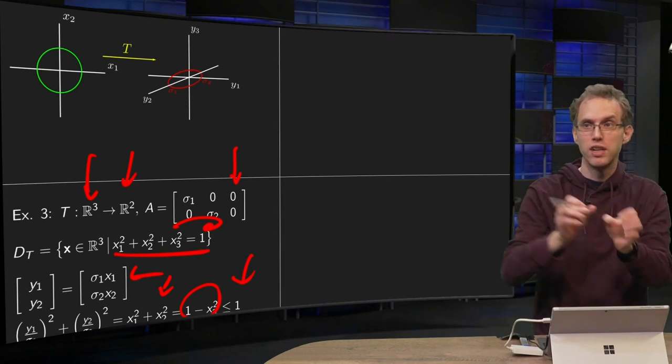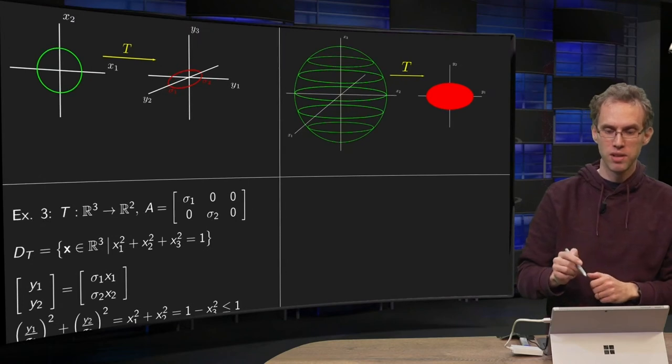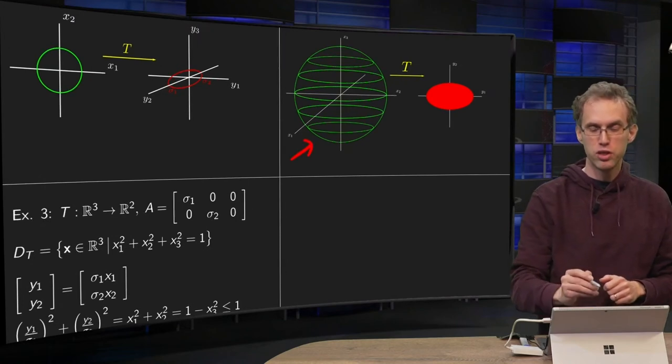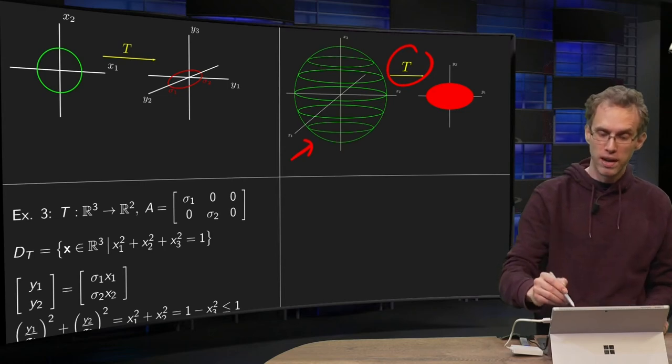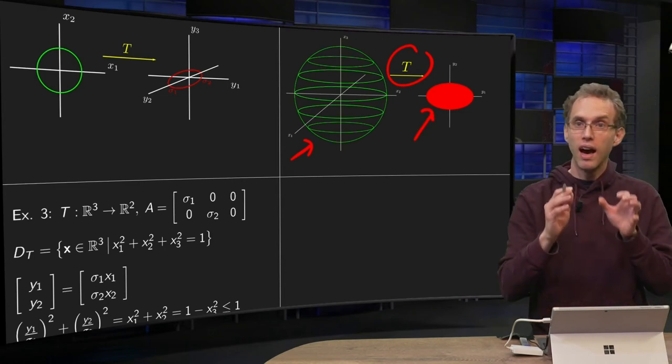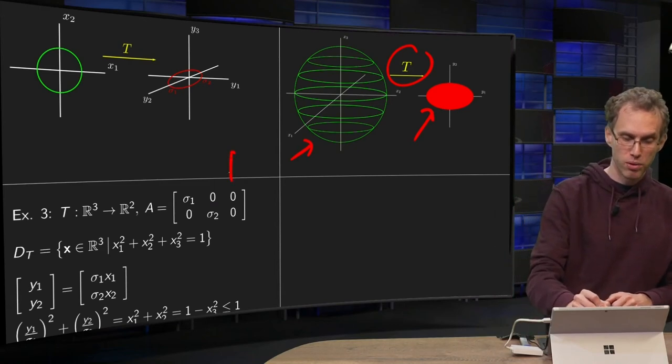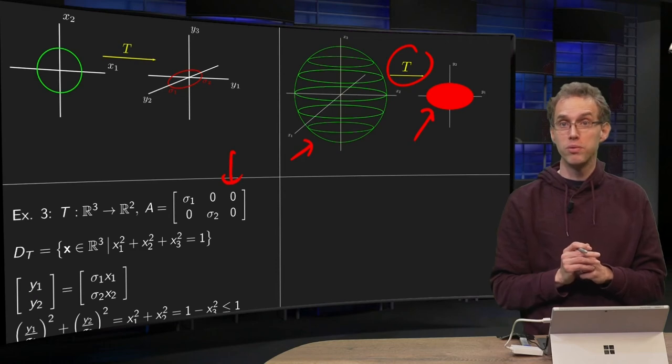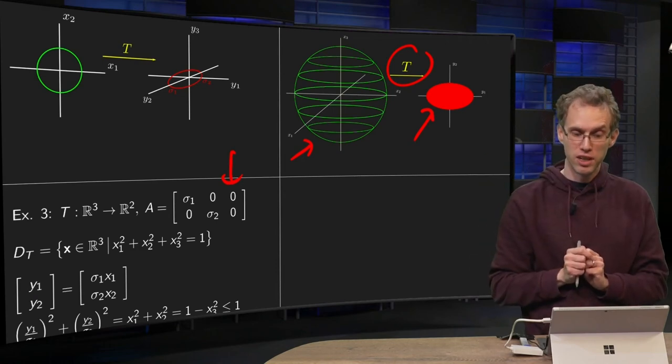That means that we don't get just the boundary of the ellipse but also everything which is inside. So the sphere is now mapped to an ellipse and everything inside, in a picture like this. So we start with the unit sphere and it is mapped by T to a 2D plane, to an ellipse and all of its interior. So that is what a matrix does if you also have some columns of zeros, you also map to the interior as well.